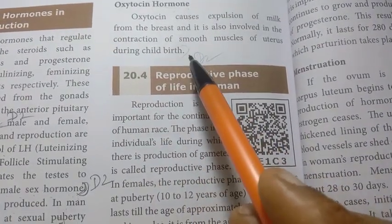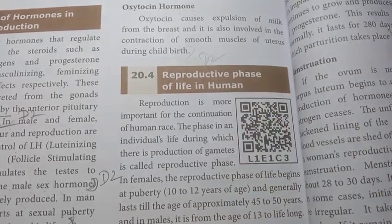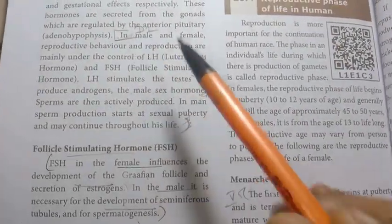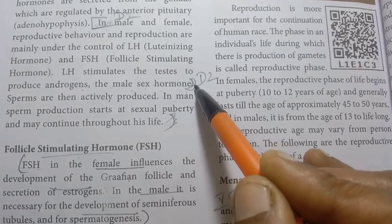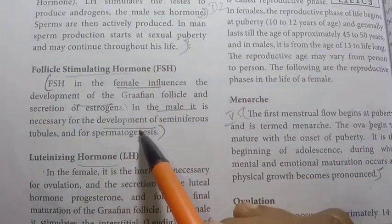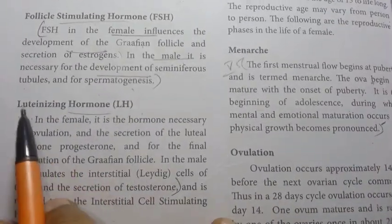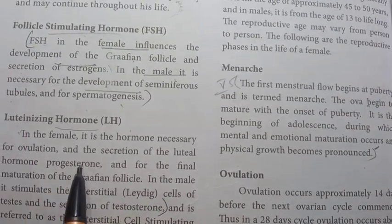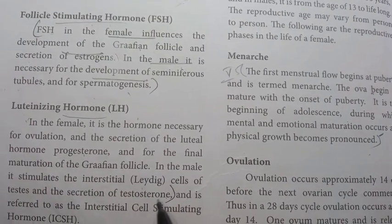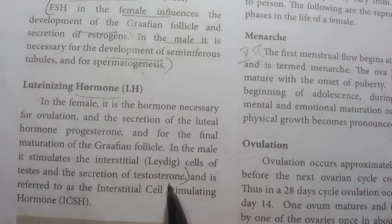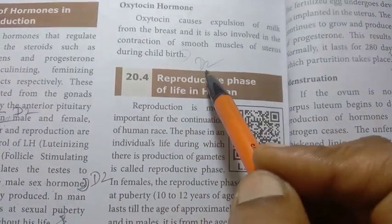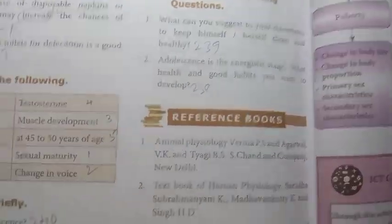Detail for the second answer: In the male, sex hormones include follicle stimulating hormone (FSH) and luteinizing hormone (LH). In females and males, secretion of testosterone. Next, prolactin — two lines, then oxytocin — four lines. This is the detail for the second answer.